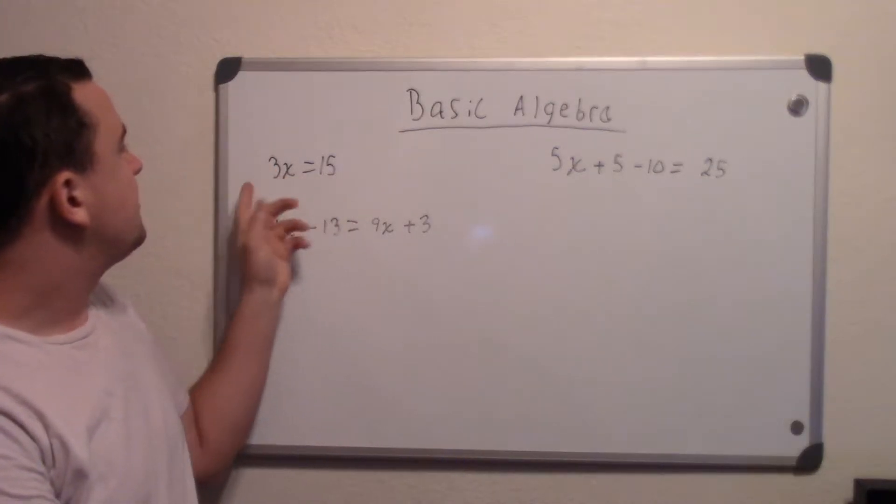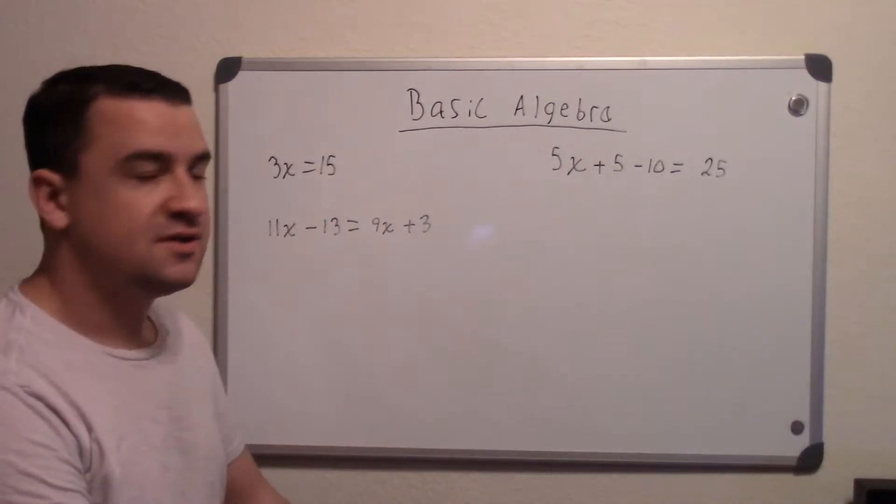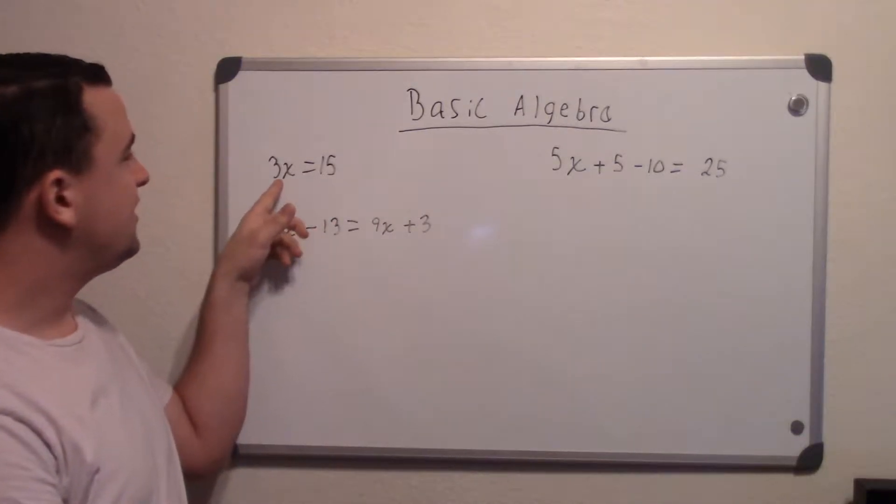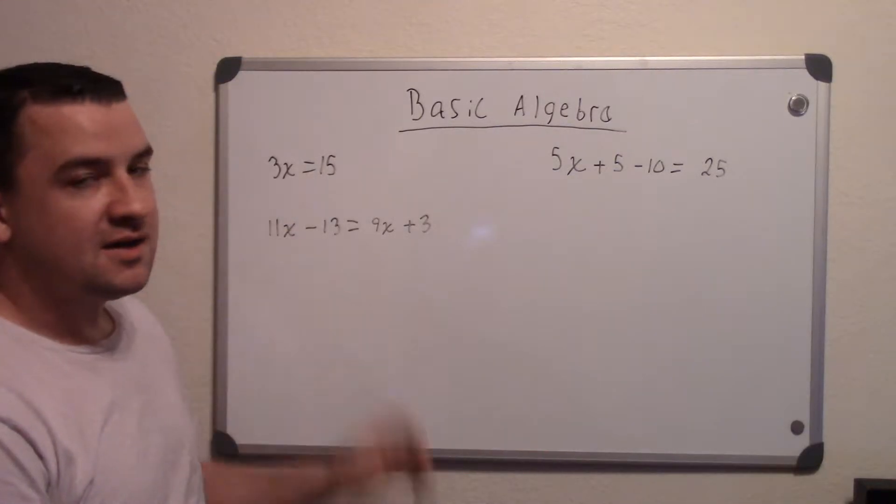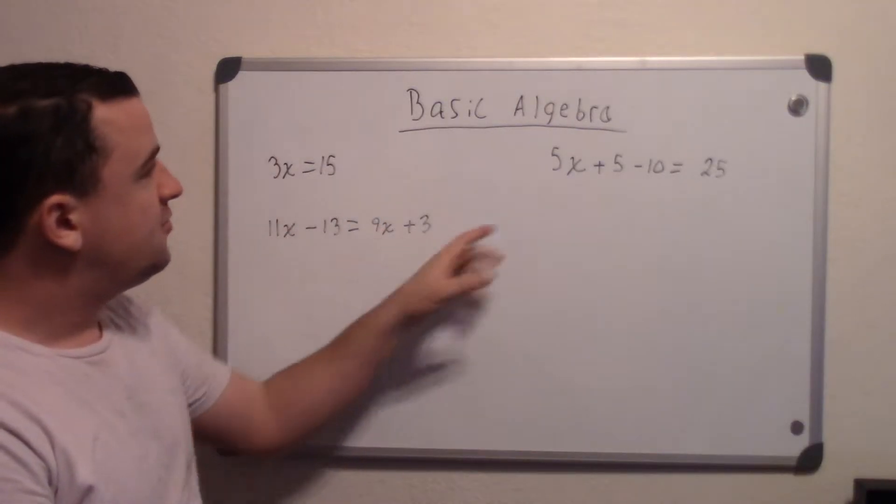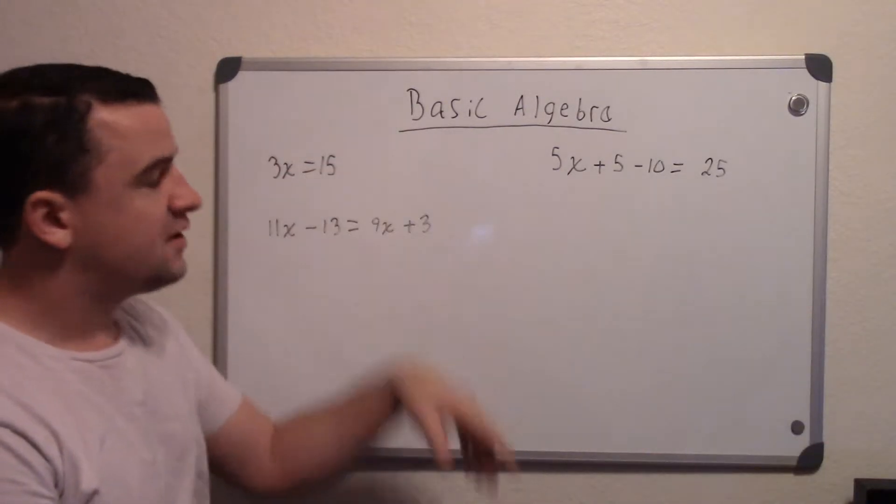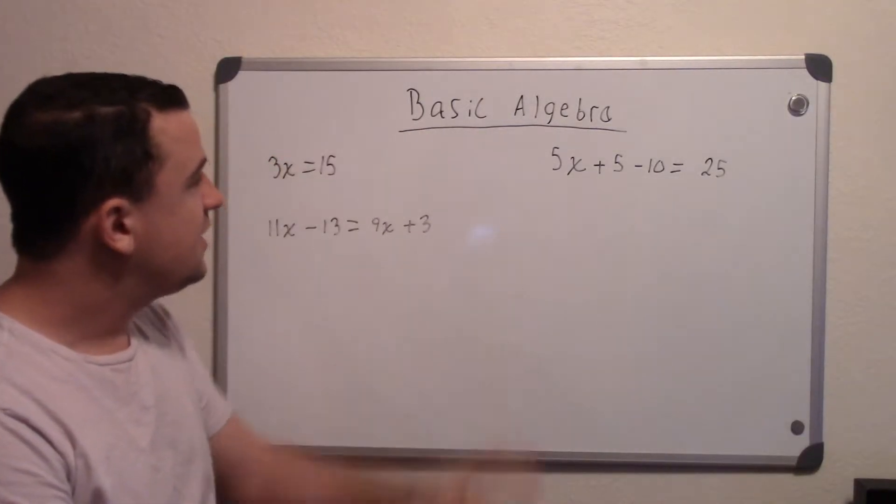So the first example here we've got is 3x equals 15. What these all are, what algebra is doing, is you're solving for an unknown. In this case, x is the unknown. And to solve for it, you have to get x by itself, isolated by itself. So you want to get all the x's on one side if you do have multiple ones, and all the whole numbers on the other side.